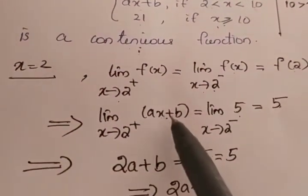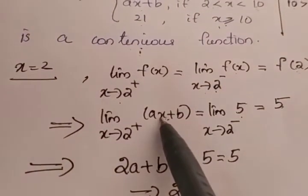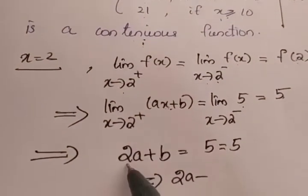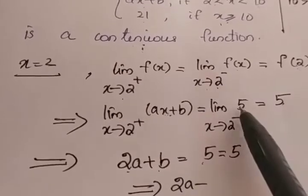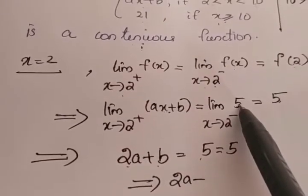So we are getting the equation. While putting the limit here instead of x, we have to apply 2. So we are getting 2a plus b is equal to this is a constant value, so no need to apply the limit.